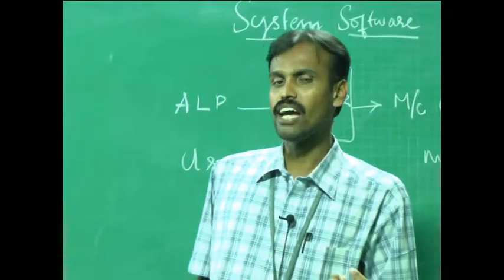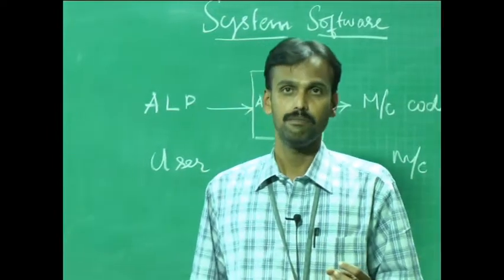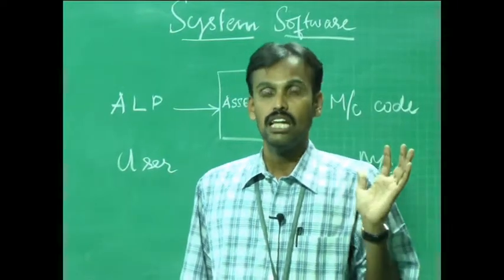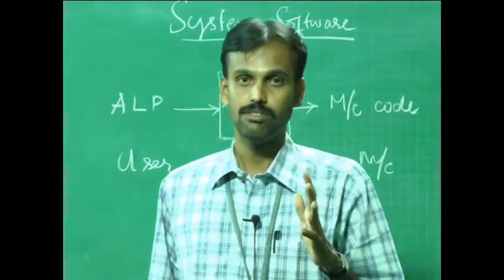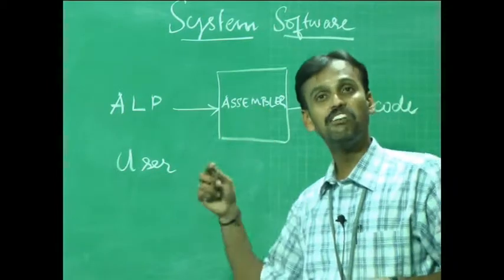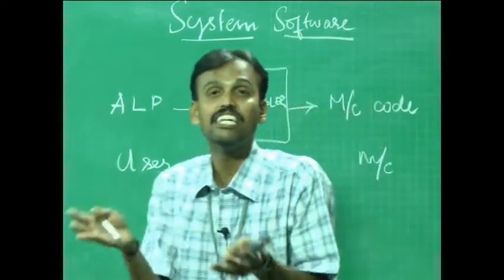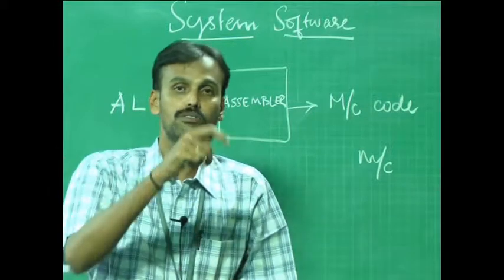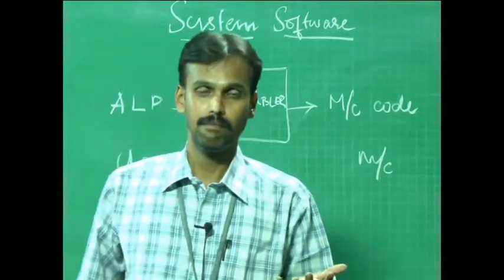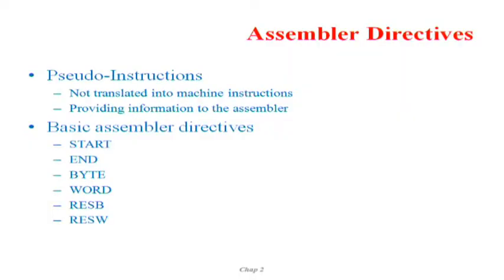There are also assembler directives, also called pseudo instructions. These are never translated into machine instructions — rather they provide information to the assembler. Examples of basic assembler directives are: START, END, BYTE, WORD, RESB (reserve byte), and RESW (reserve word).